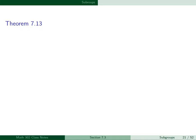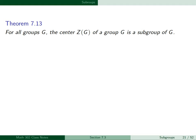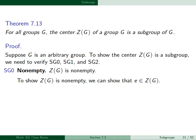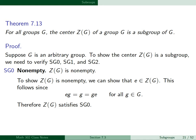Theorem 7.13 states that for all groups G, the center Z(G) is a subgroup of G. To prove this, suppose G is an arbitrary group. We verify SG0, SG1, and SG2. For SG0, we show Z(G) is non-empty by showing the identity belongs to the center. This follows since EG equals G equals GE for all elements G in G, so the identity commutes with all elements. Therefore Z(G) contains the identity and satisfies SG0.